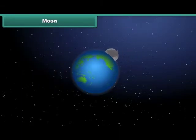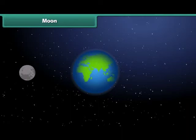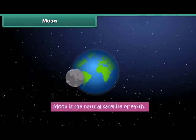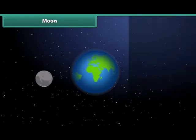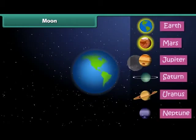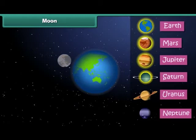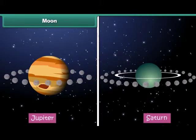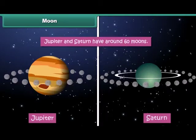A natural satellite is a celestial object that revolves around a planet. It is natural and not man-made. Moon is the natural satellite of Earth and revolves around it. Apart from Earth, Mars, Jupiter, Saturn, Uranus and Neptune also have moons. While Earth has only one moon, all other planets have more than one. Jupiter and Saturn have around 60 moons each.